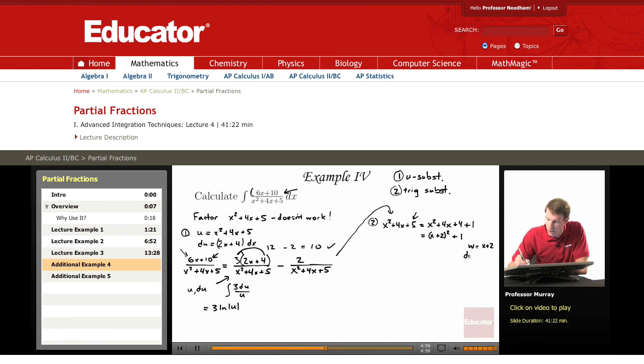And then dw is just dx. So we have, for the second integral, minus the integral of 2 dw over x plus 2 squared. So that's w squared plus 1.